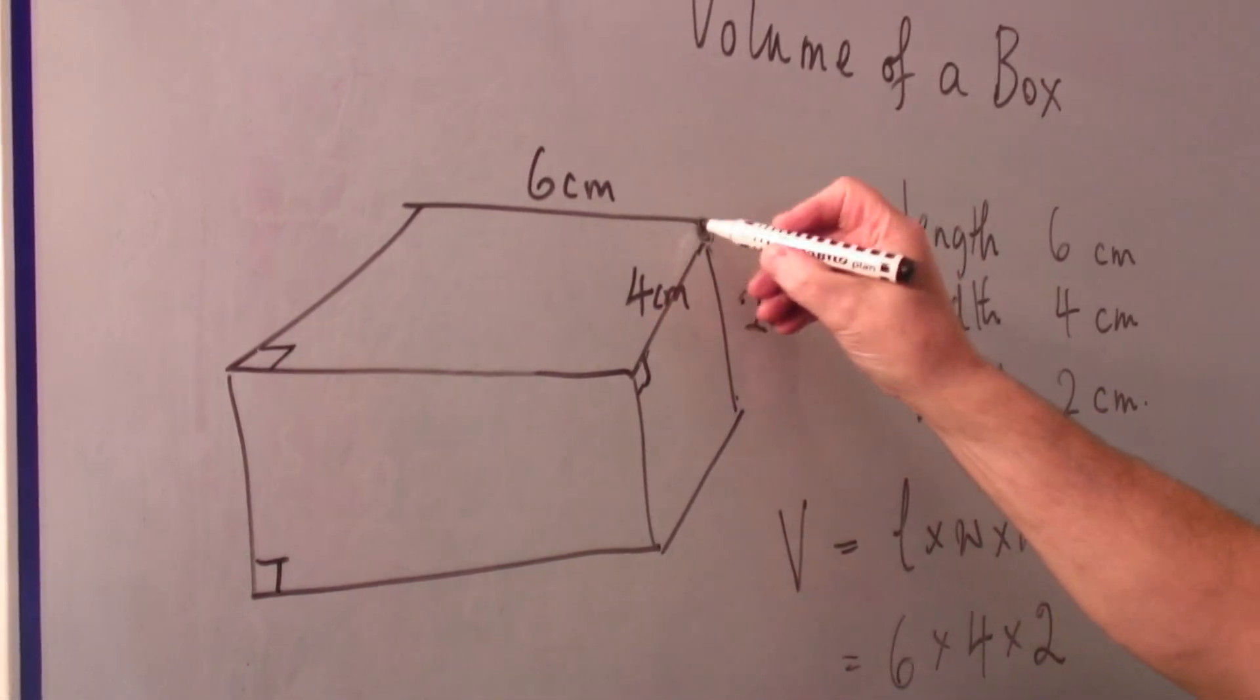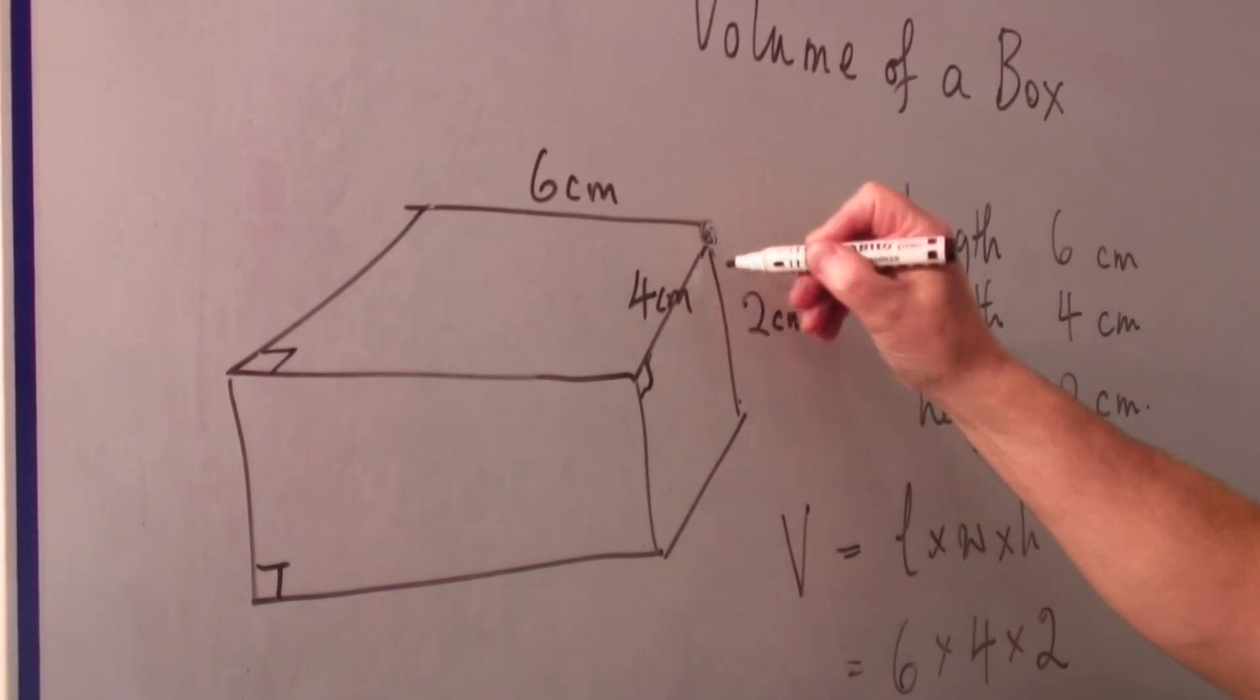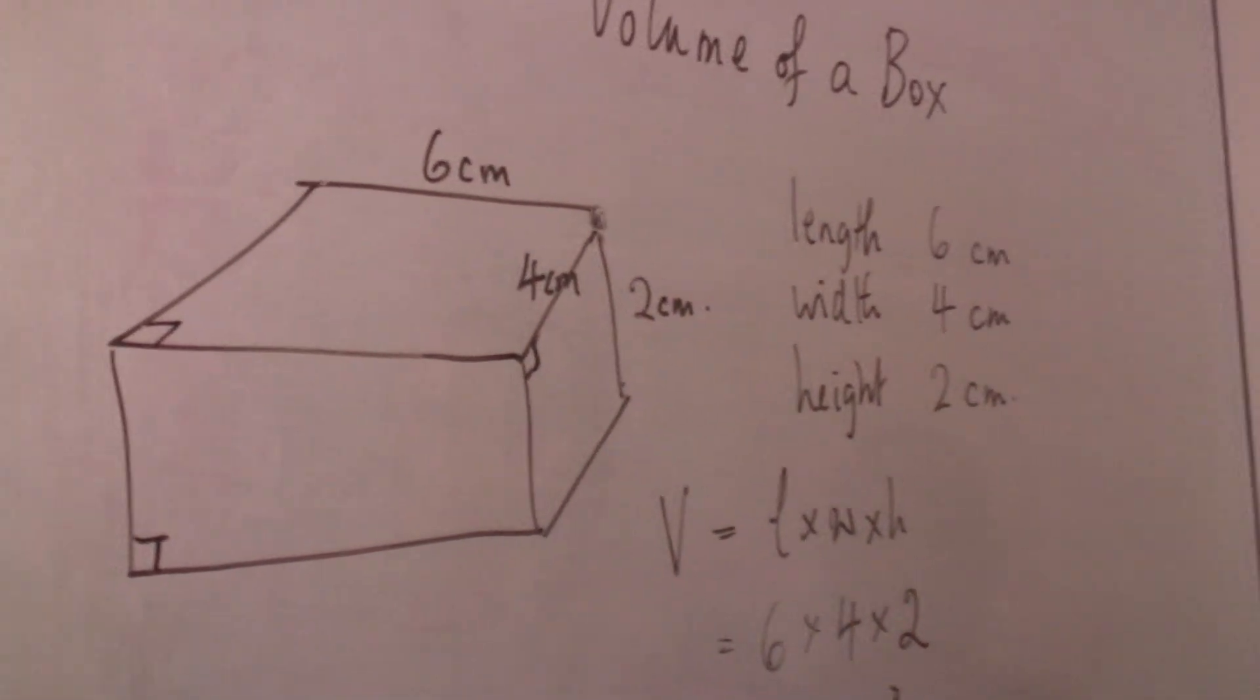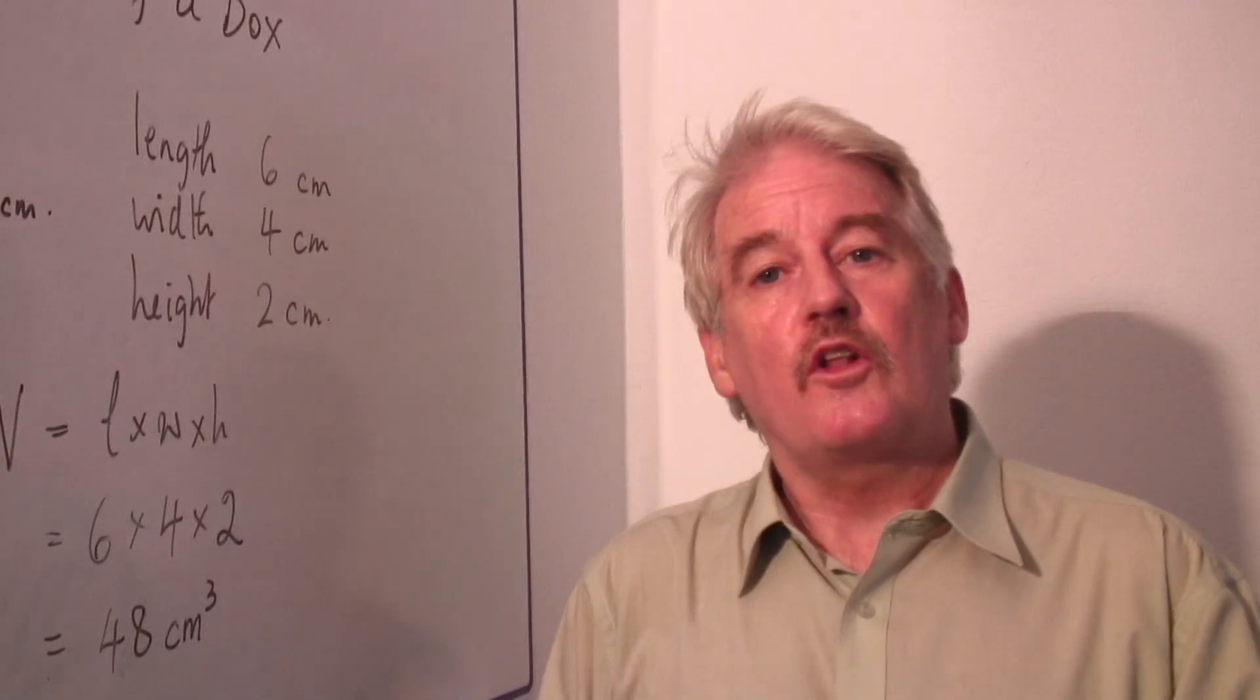So you can never get the wrong measurements, it's always there's that one, times that one, times that one. That's the easy way to work out the volume of a box.